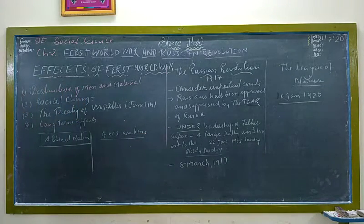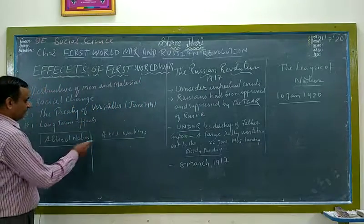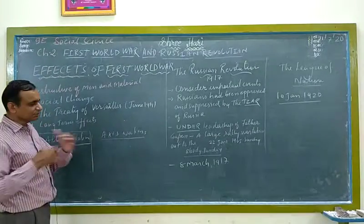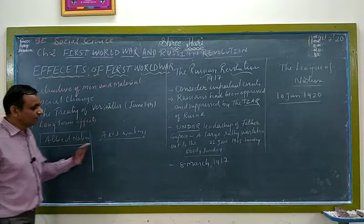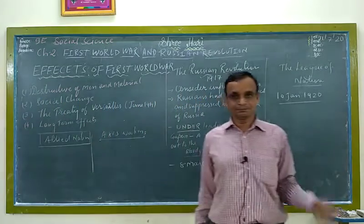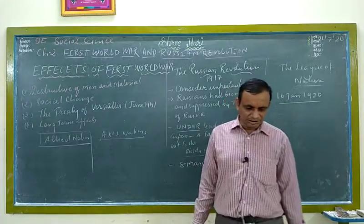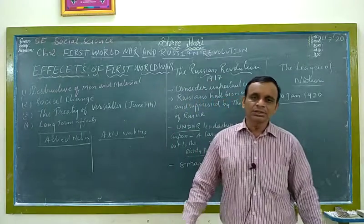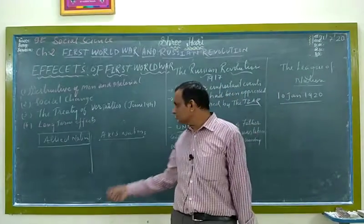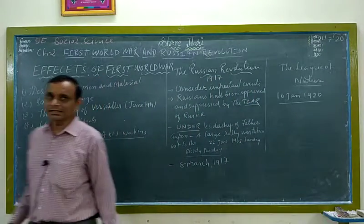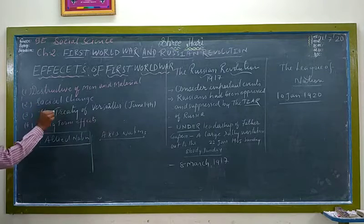In the First World War, Germany was very powerful initially and wanted many regions. However, Germany surrendered to the Allied nations and signed the ceasefire treaty, and the war came to an end. The first major effect of the First World War is the destruction of men and materials.